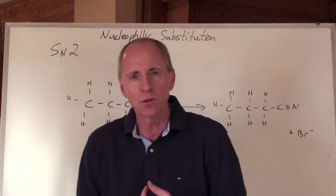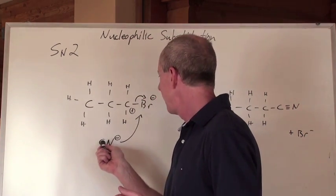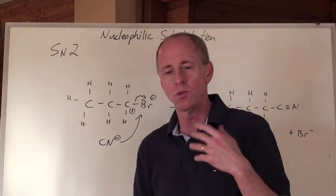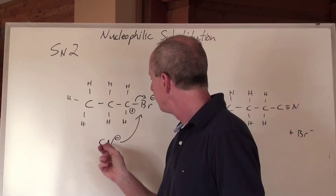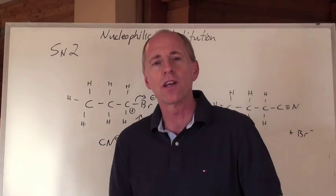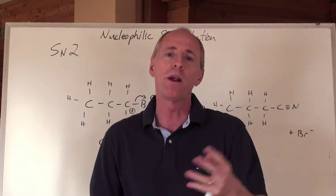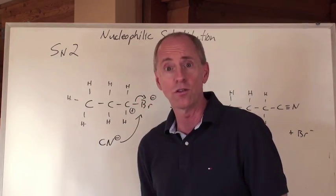CN negative is really good. OH negative is great. Generally speaking, chlorine and bromine and things like that, halogens don't really substitute well with halogens. You would never pick that for a reaction. Hydroxide, cyanide, those kinds of things, those are good. And ammonia, NH3, because of the lone pair on the nitrogen, that's a really good one as well. That acts as a nucleophile.